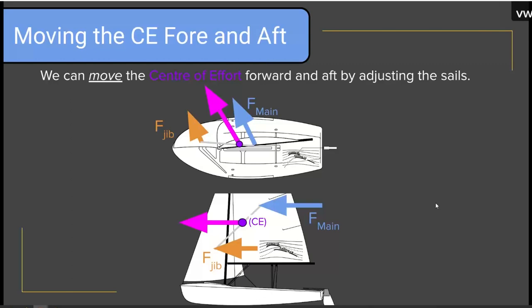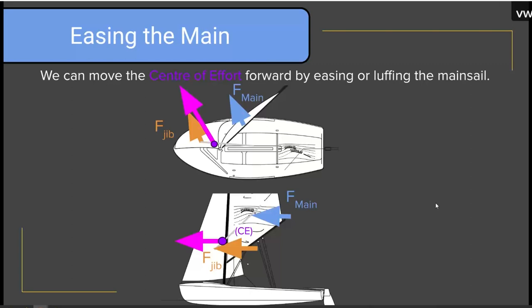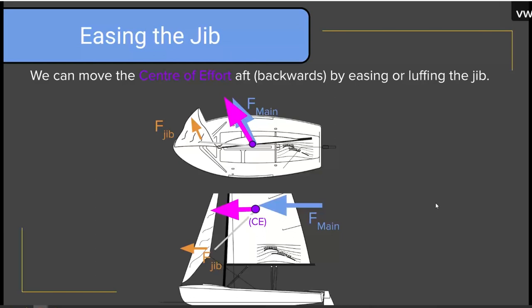To show what that looks like, let's say we let the mainsail out. What happens is the force of wind on the mainsail becomes much less than in the jib, so the center of effort shifts forwards — towards the sail that's pulled in and away from the sail that's sheeted out. What happens if we ease the jib? A very similar thing happens: the force in the jib gets smaller, the force in the mainsail stays the same, so the center of effort moves aft. The center of effort can move forward or backwards.